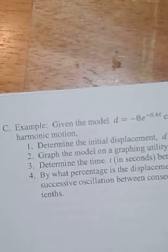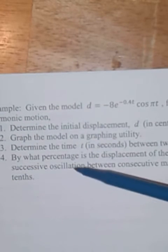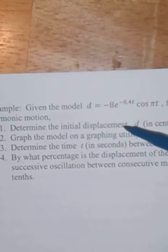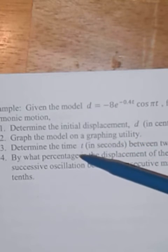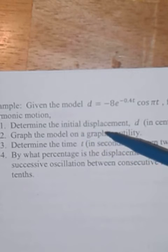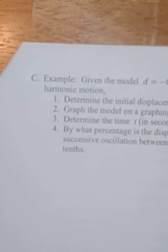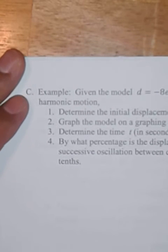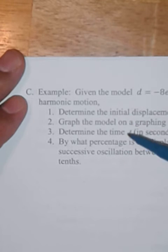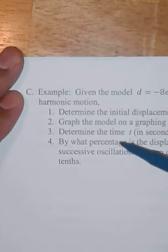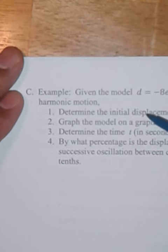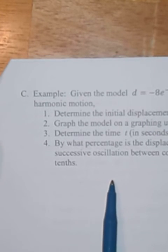So damped harmonic motion means that harmonic motion starts in a certain way and then starts dampening. It starts, the sine or cosine function starts getting shorter and shorter and shorter. Kind of like if you're in a car and you hit a bump, your car is pushed up and then comes back down. So the motion, and then it levels off again. And that's damped harmonic motion.